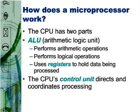Computer ads like to include microprocessor specifications relating to its performance. A microprocessor's performance is affected by several factors, including clock speed, word size, cache size, instruction set, and processing techniques.